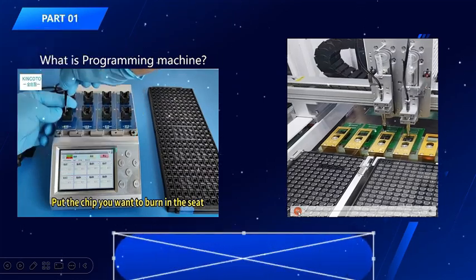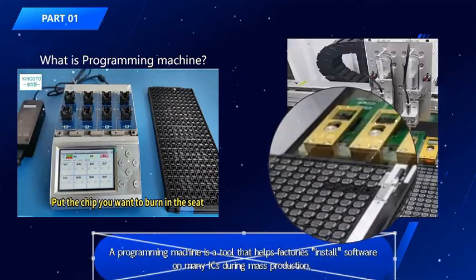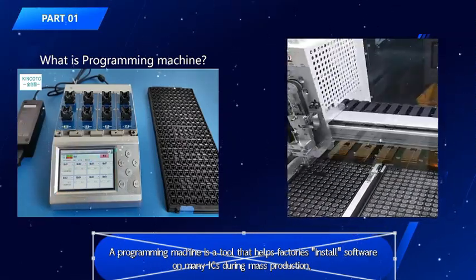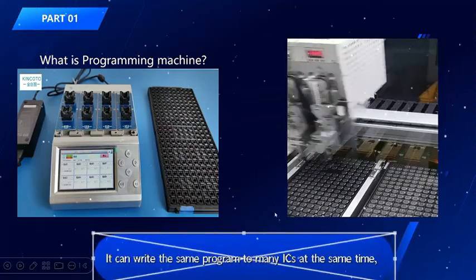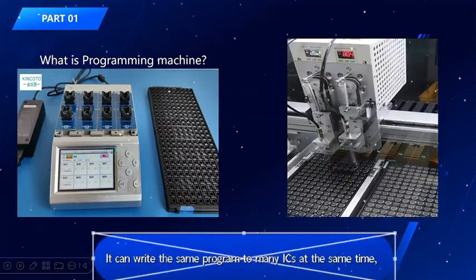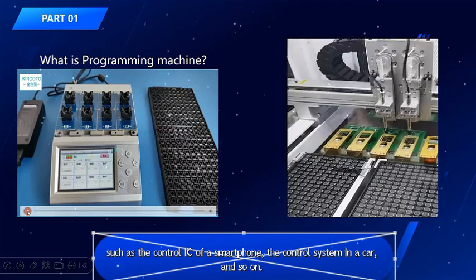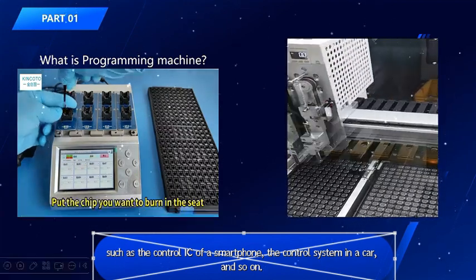A programming machine is a tool that helps factories install software on many ICs during mass production. It can write the same program to many ICs at the same time, such as the control IC of a smartphone, the control system in a car, and so on.